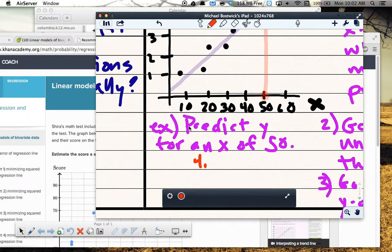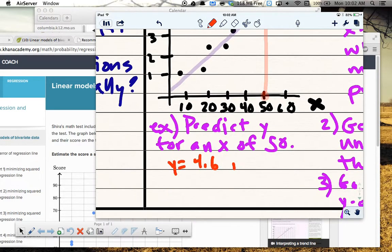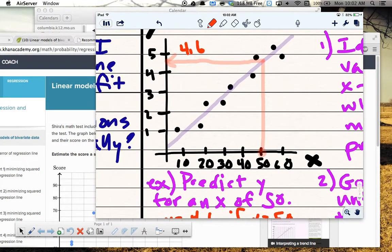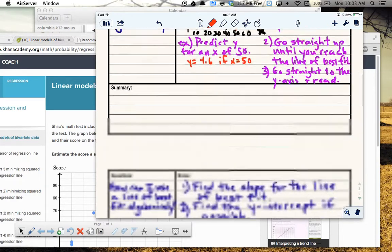And I can see that my prediction should be something like 4.6. And so I can say y equals 4.6 if x equals 50. All I did was I went up from an x of 50, hit the line of best fit, and went over to the left until I reached the y-axis. And then I just read. It's about 4.6. All right. Let's keep moving.